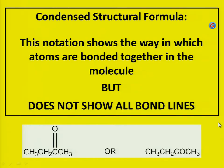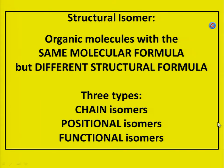Condensed structural formula: this notation shows the way in which atoms are bonded together in the molecule, but does not show all bond lines. Structural isomer: organic molecules with the same molecular formula but different structural formula. There are three types: chain isomers, positional isomers, and functional isomers.